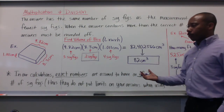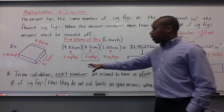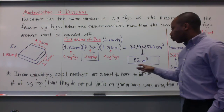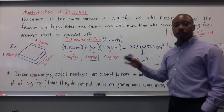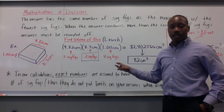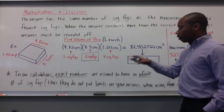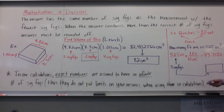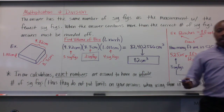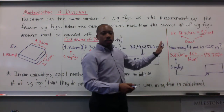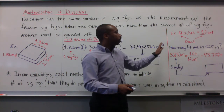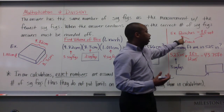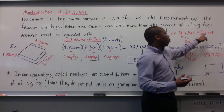Now, a side note. In our calculations, exact numbers — which you learned about in the last video — are assumed to have an infinite number of significant figures. Thus, they do not put limits on your answers when using them in your calculations. For example, there are 12 inches in one foot.